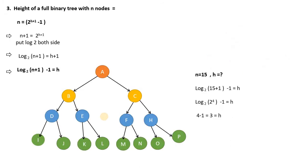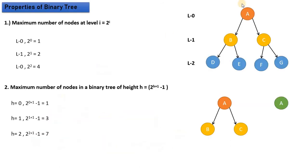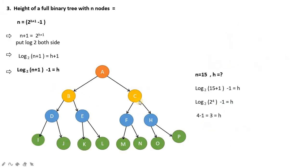The next property: in the last slide we saw how to find the maximum number of nodes if we know the height. Now let's do the reverse — if we know the number of nodes, we can find the height. The property is: height of a full binary tree with n nodes. We will use the same formula but rearrange it.